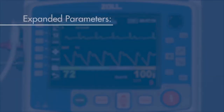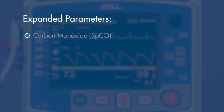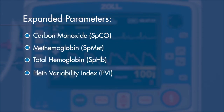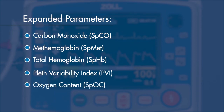The available expanded parameters are carbon monoxide, methemoglobin, total hemoglobin, pleth variability index, oxygen content, and perfusion index.